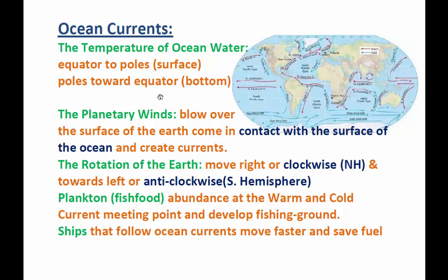The second factor is planetary winds. Winds are always blowing on the surface of the ocean. When they blow, they come in contact with the surface of the ocean and create currents. The direction of these currents depends on the directions of the planetary winds blowing on the surface of the earth.